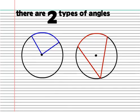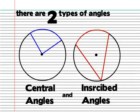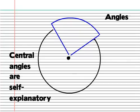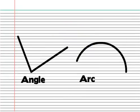Anyway, there are two types of angles found inside circles. Central angles and inscribed angles. Central angles are self-explanatory. Angles from the center point. The relationship with the arc is one-to-one. So the angle measurement equals the arc measurement.